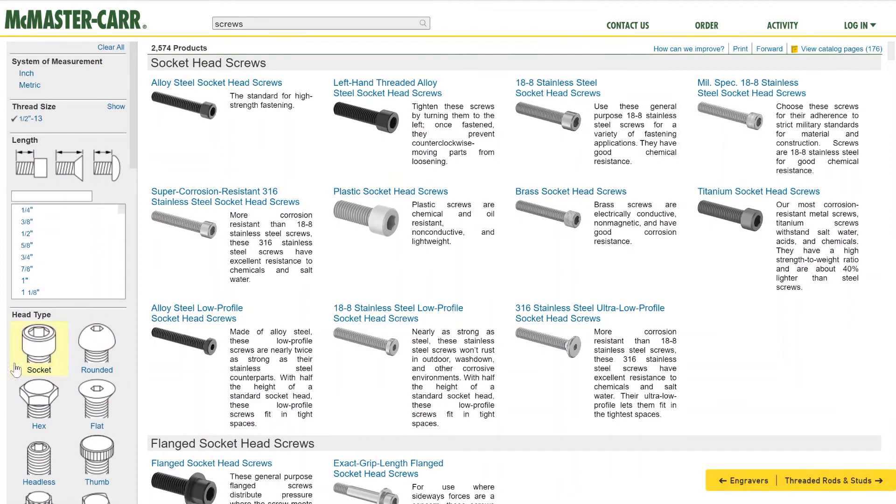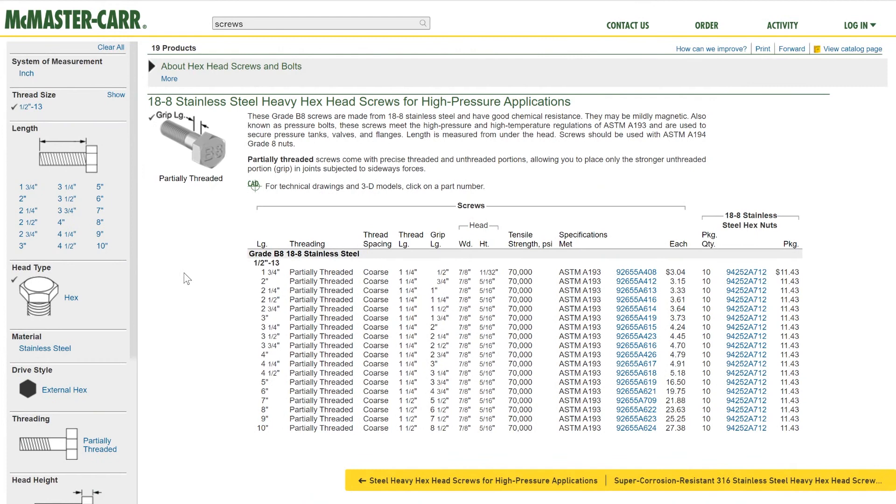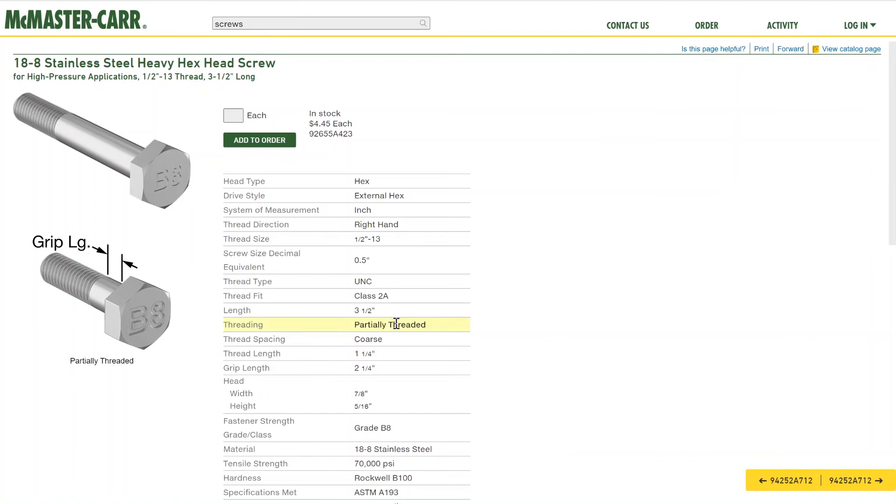I click on screws and bolts, I look up the thread size 1/2 inch-13, I choose a hex head type, and let's say I'm looking for a stainless steel bolt for high pressure applications. Since the members add up to three inches, I'm gonna go with a 3.5 inch long bolt so that the nut can be screwed in on the other end.